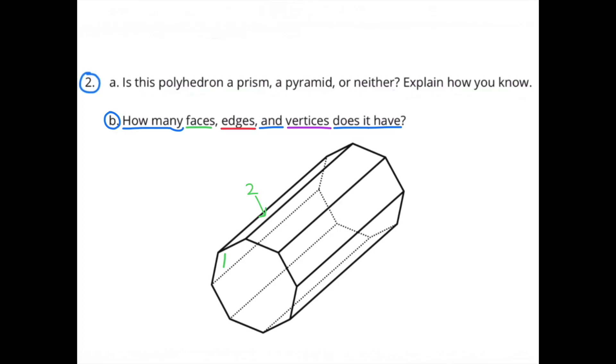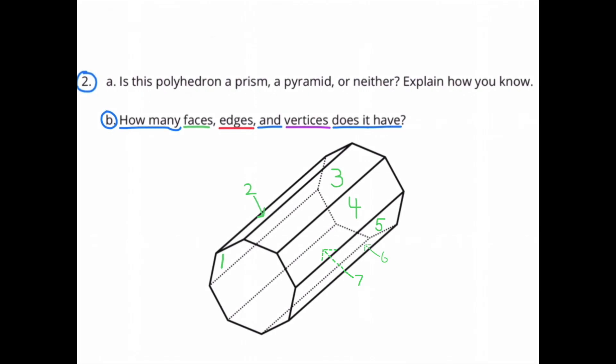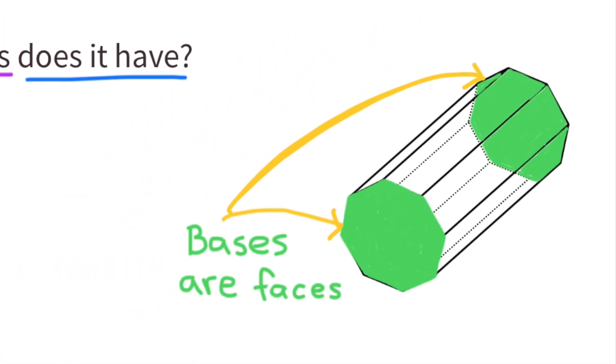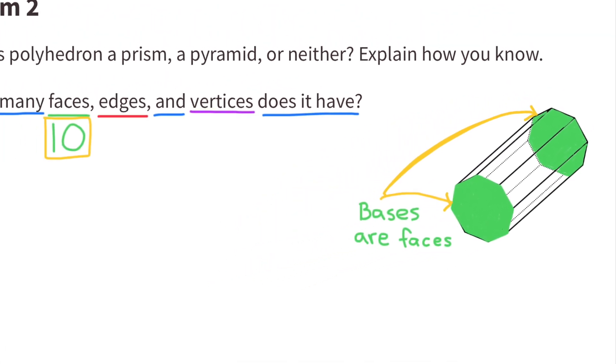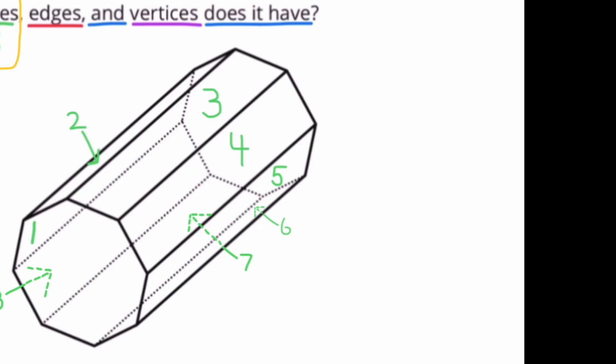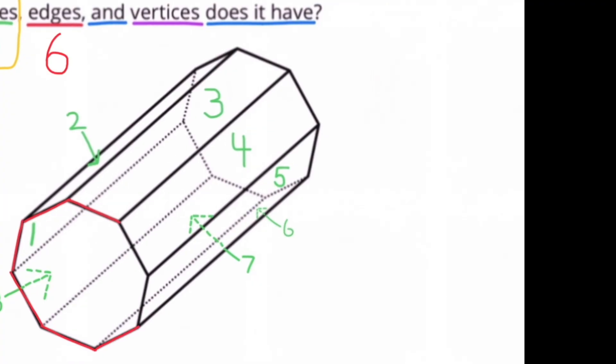Now the edges: 1, 2, 3, 4, 5, 6, 7, 8. So there's 8 edges on base 1 and 8 edges on base 2, for a total of 16 edges on the bases.